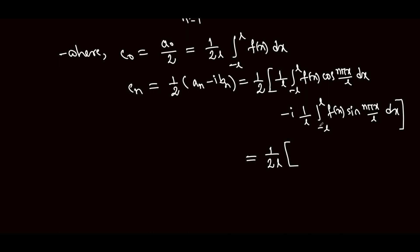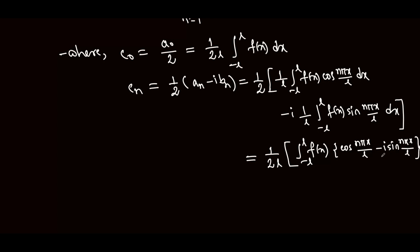If the integration is from minus L to L, then cn is given by the integral of f of x multiplied by e to the power of minus i n pi x by L into dx. This expression uses Euler's formula with cos n pi x by L minus i sin n pi x by L.